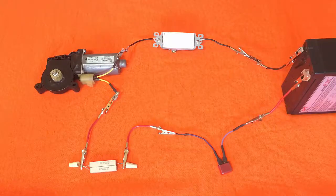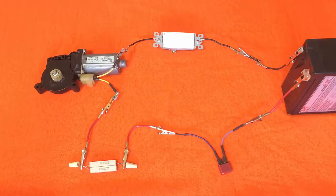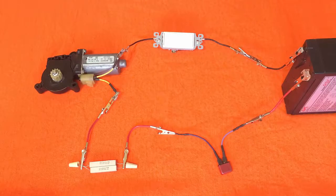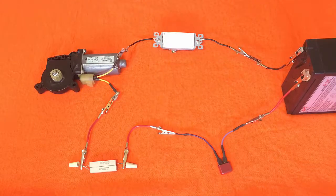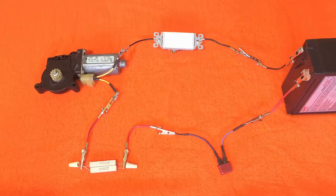In this video, I have a window motor set up so that we can see if the polarity will make the window motor spin one direction, and then when we reverse the polarity, have it spin the other way. This is what we're expecting because by design we want the window to go up or down.